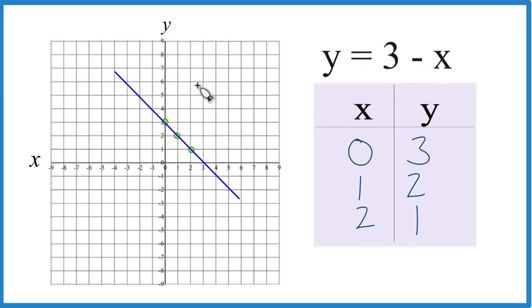And that's the graph for y equals 3 minus x. Let's put arrows to show it goes to infinity, and there you have it.